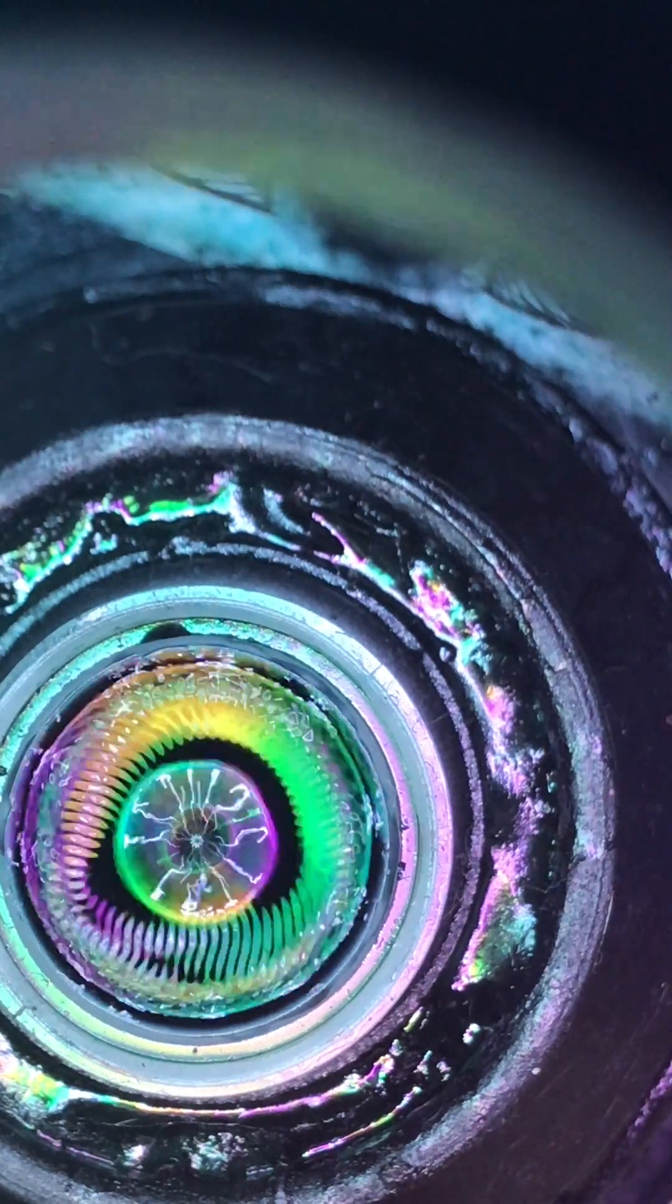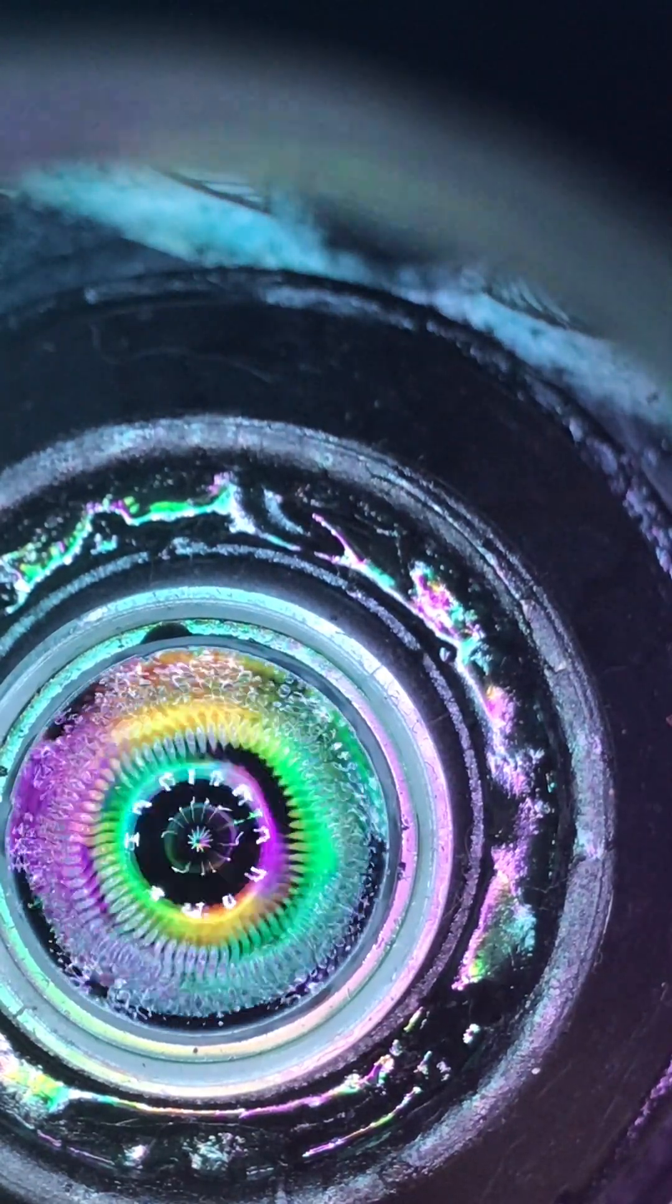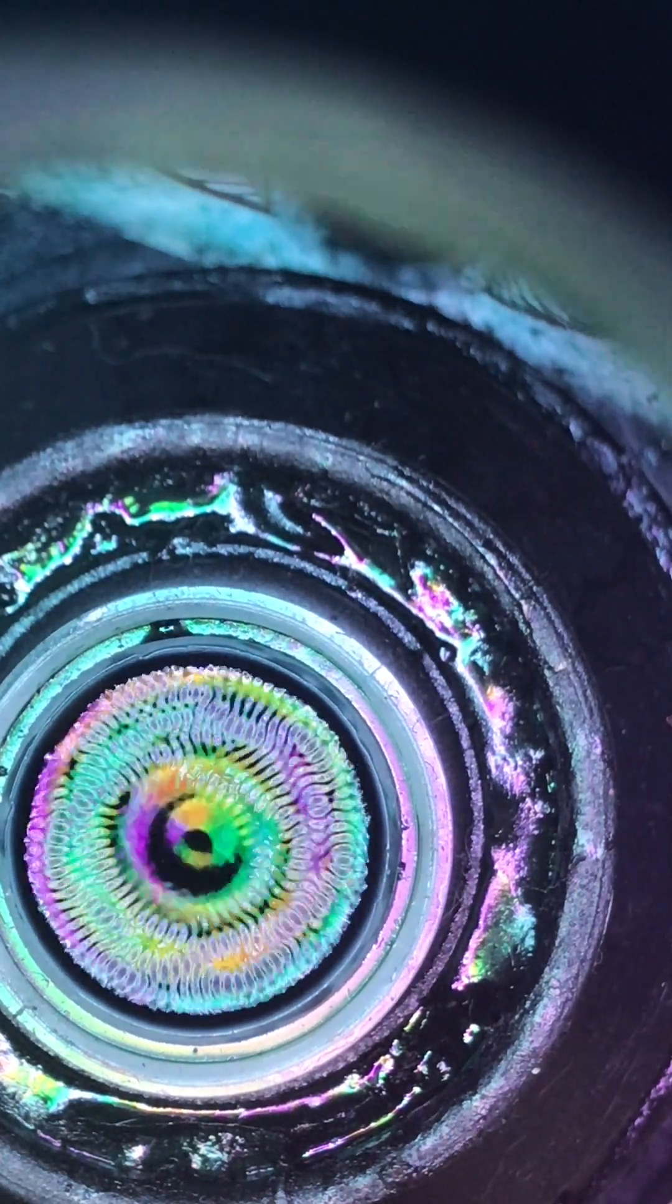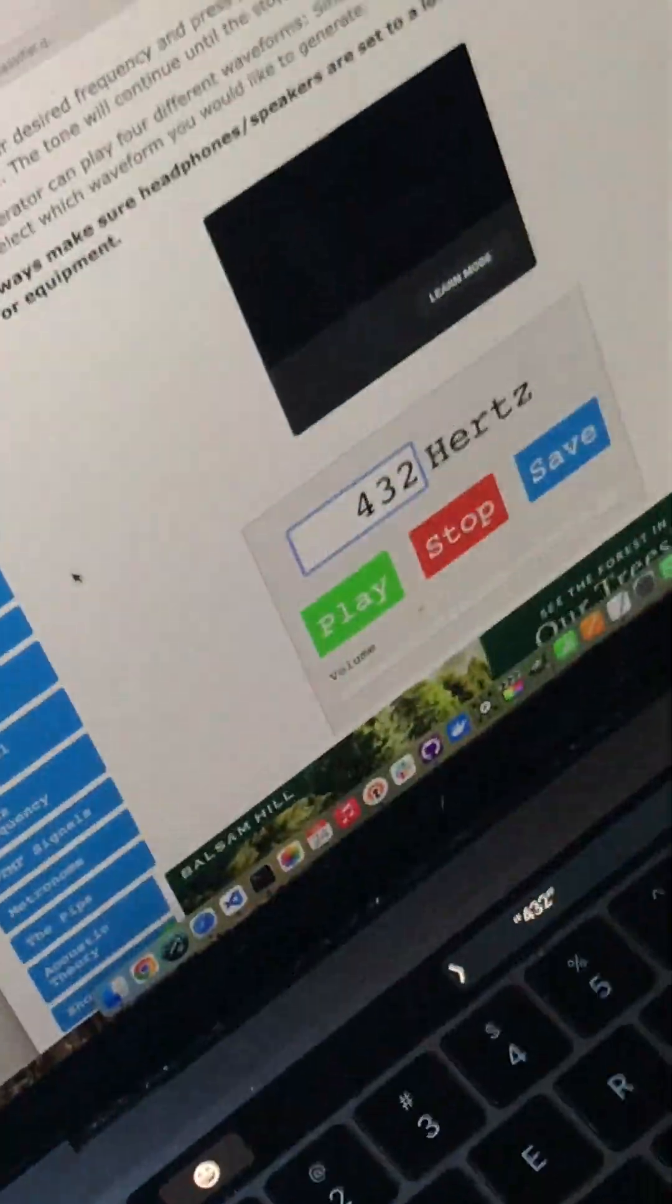Now since I changed the fluid, let's go ahead and go back to 432. Let's see what happens with that one since I changed the fluid. Take a second for that to shift. The middle ring starts to combat with itself. Let's see if it collapses. Sure enough, it collapsed. The center's a bit more pronounced in this one, but still nothing compared to the 440.